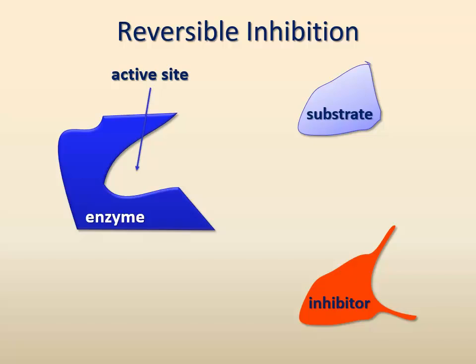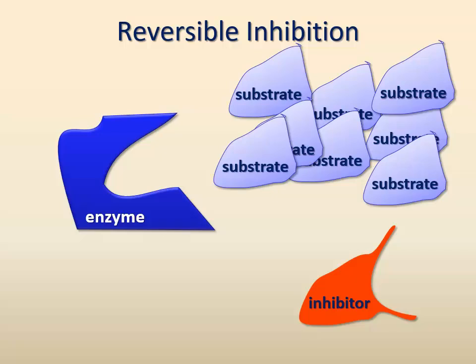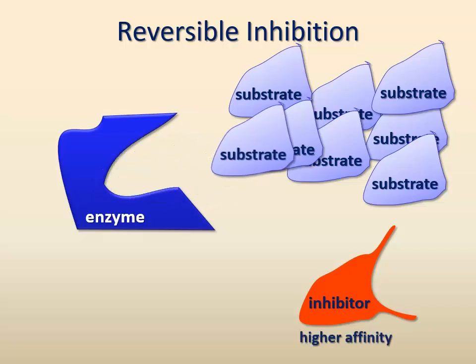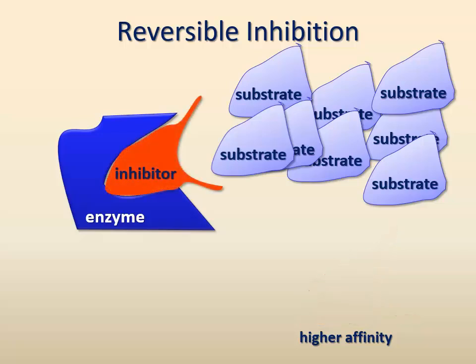When both the inhibitor and substrate are present, they bind competitively to the enzyme active site based on their concentrations and affinities for the active site. The higher the concentration of a substance in a mixture, the higher the chances that the molecules of this substance will bind to the active site, and of course vice versa. Similarly, the higher the affinity of a substance to the active site, the more likely it is to out-compete another substance with lower affinity. Because both the substrate and the inhibitor reversibly compete for binding to the active site, we call this type of enzyme inhibition reversible and competitive.